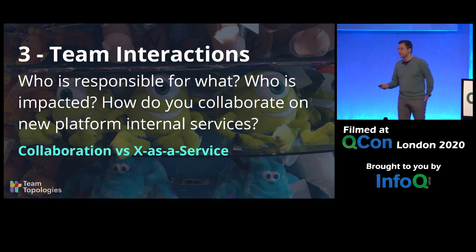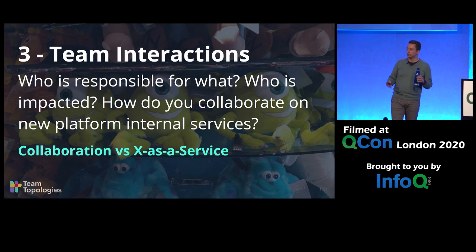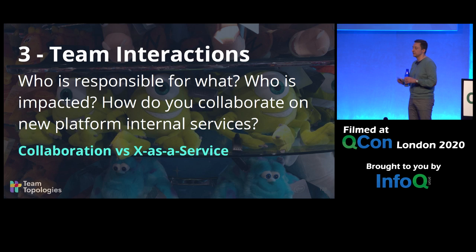Number three: clarify the team interactions. Be more intentional about when should we collaborate, when should we expect to just consume this service without requiring active collaboration, and how do we develop new services — who needs to be involved, and for how long. It shouldn't be open-ended. It should be: we expect to collaborate for two weeks or two months to understand what service you need and discover good solutions, and then at some point it changes to X as a service.